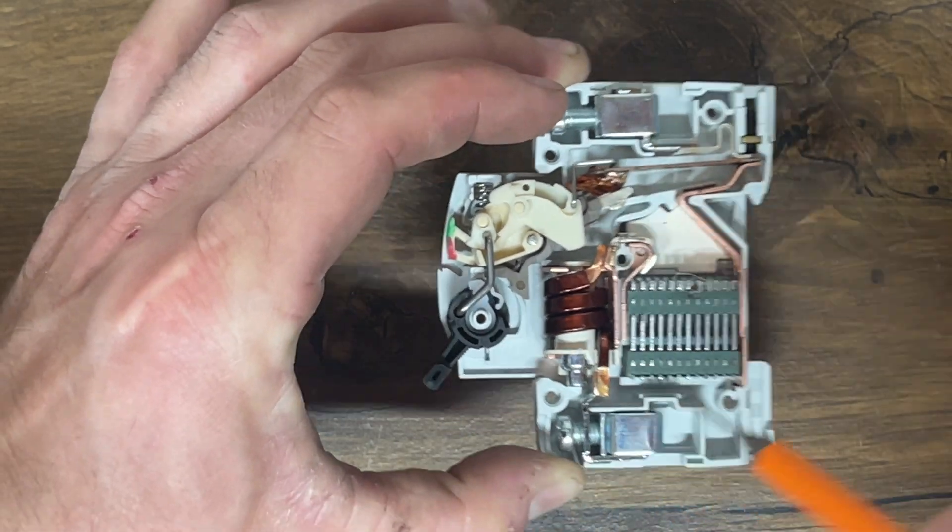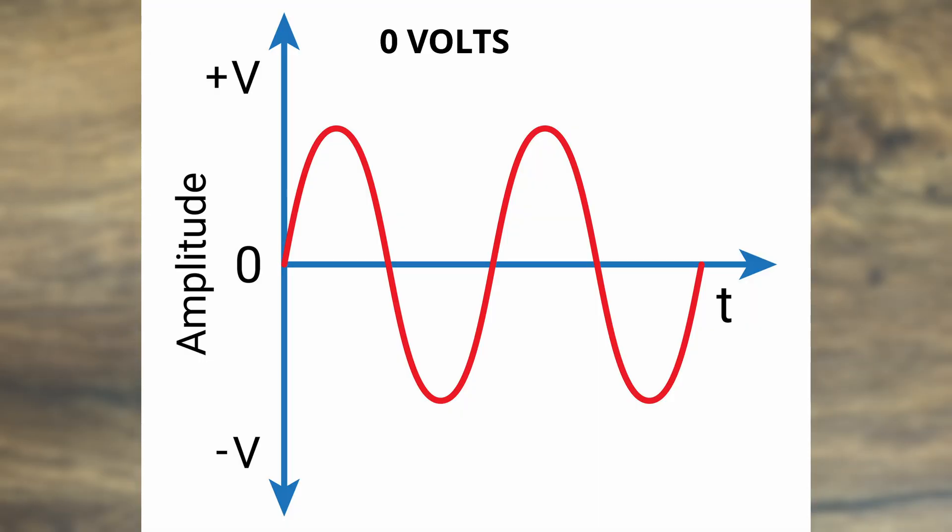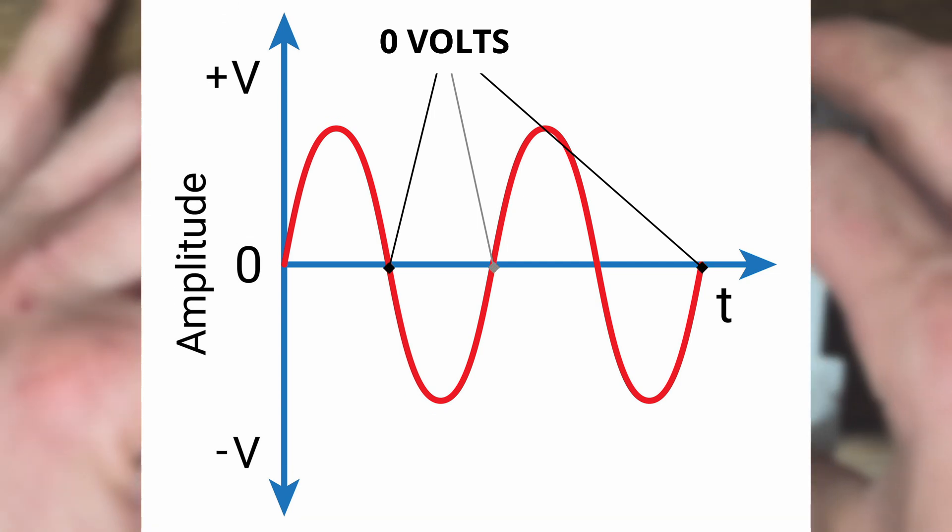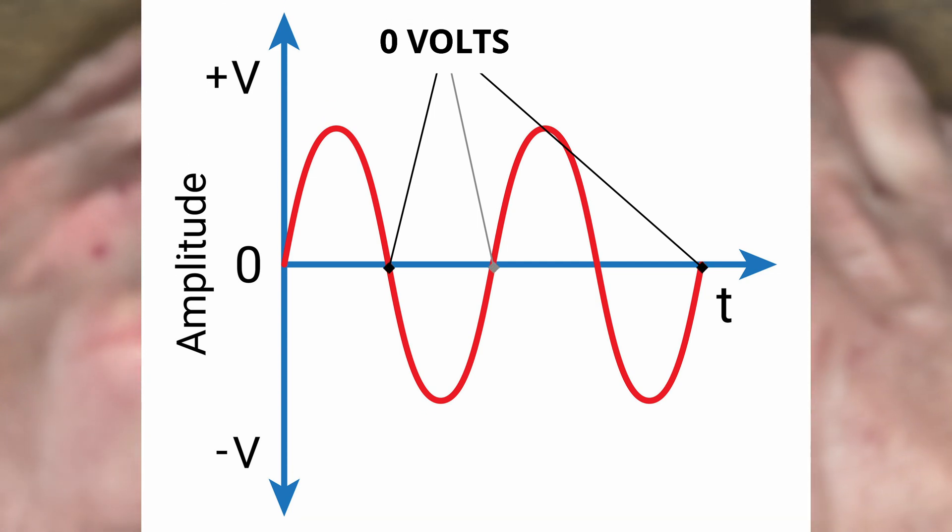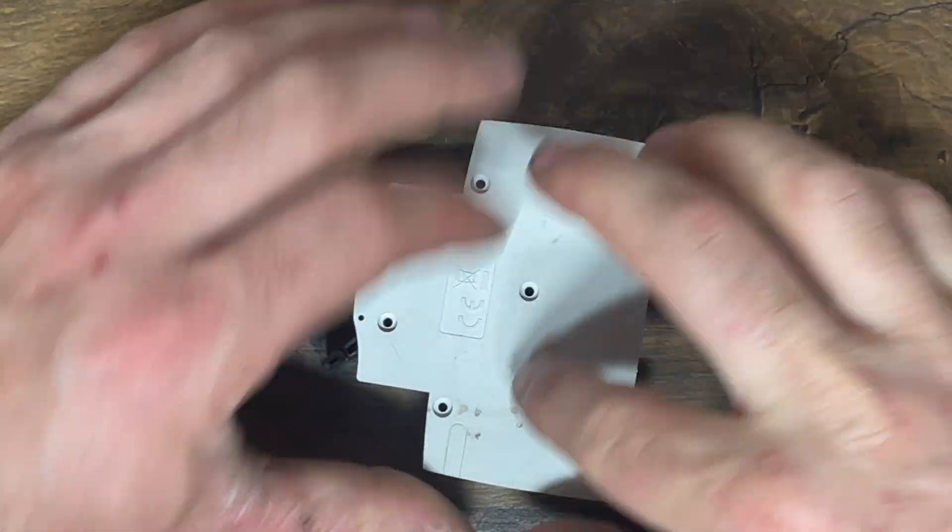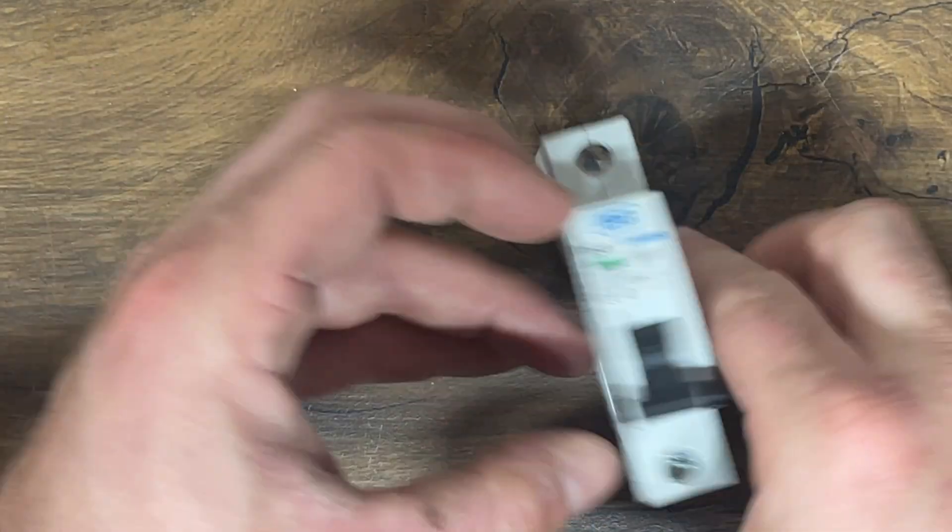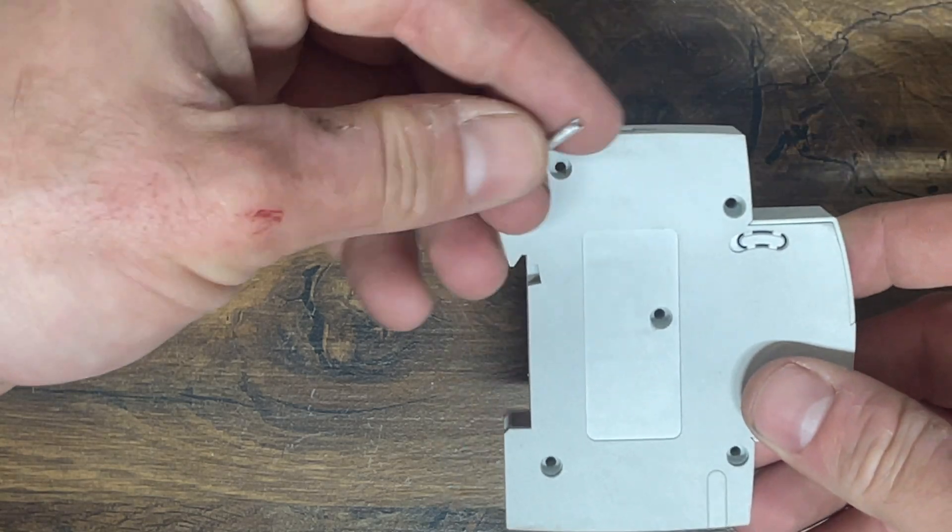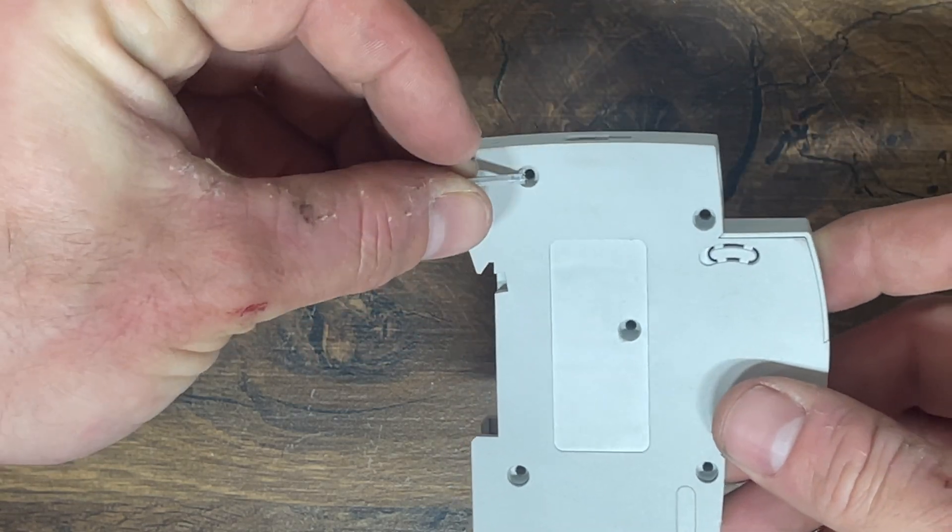DC MCBs are set up a little bit different because that arc doesn't break halfway through the cycle. So there we have the basics of our MCB. How about we jump to a cutaway version where we can see this MCB working in practice.